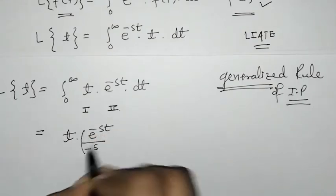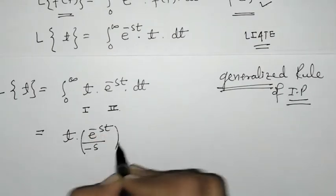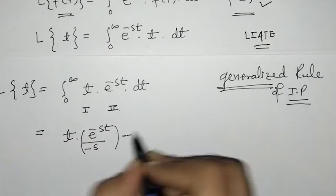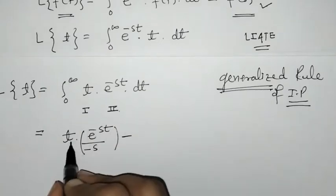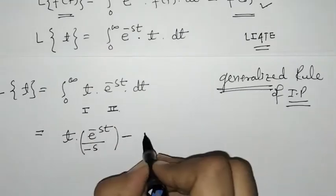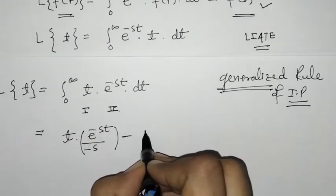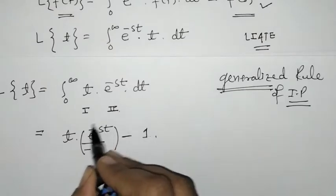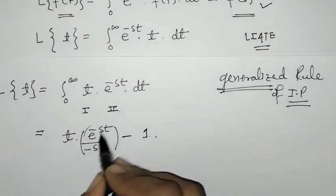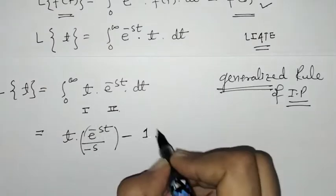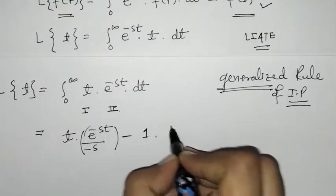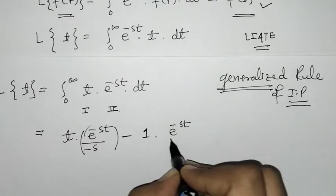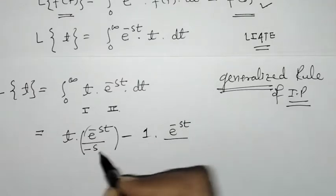The integration of e raised to minus st is e raised to minus st upon minus s. Then minus the derivative of the first function, which is 1, times the integration of e raised to minus st, giving e raised to minus st upon minus s squared.